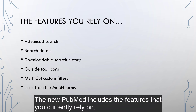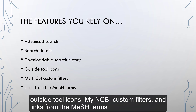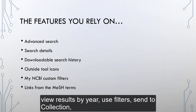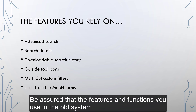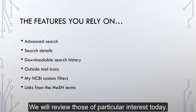The new PubMed includes the features that you currently rely on, such as advanced search, search details, downloadable search history, outside tool icons, My NCBI custom filters, and links from the MeSH terms. You will also still be able to view results by year, use filters, send to collection, send to clipboard, send to My Bibliography, and save and email your results. Be assured that the features and functions you use in the old system are available in the new one, perhaps in a different location or with a different look.